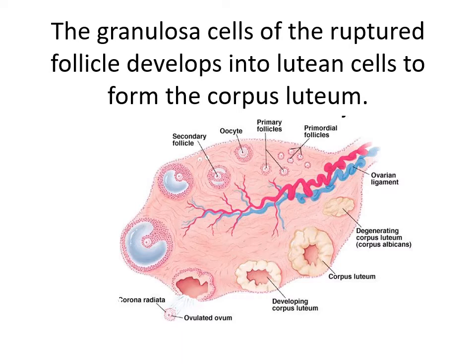Progesterone, together with some estrogen, causes the uterine mucosa to enter the progestational or secretory stage in preparation for implantation of the embryo. If the oocyte is fertilized, degeneration of the corpus luteum is prevented by human chorionic gonadotropin, a hormone secreted by the syncytiotrophoblast of the developing embryo. The corpus luteum will then continue to grow and form the corpus luteum of pregnancy, otherwise known as corpus luteum graviditatis. By the end of the third month, this structure may be one-third to even one-half the total size of the ovary.